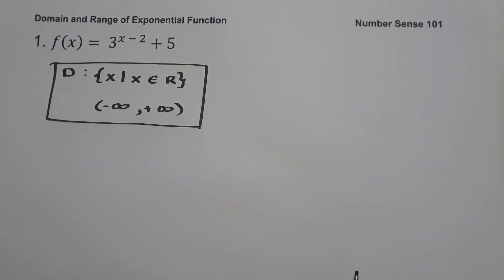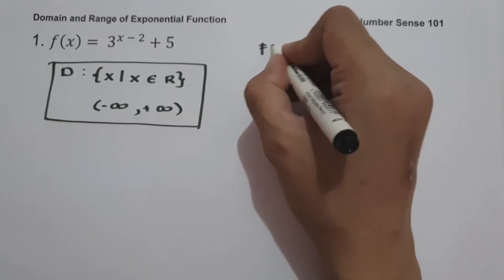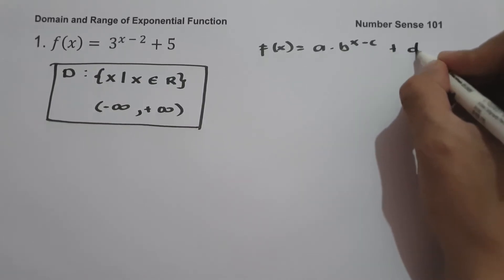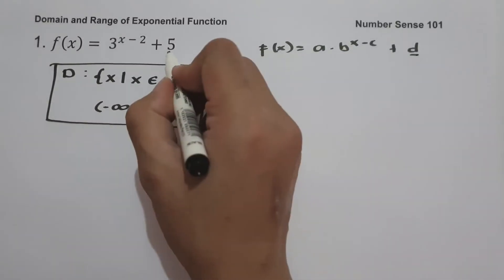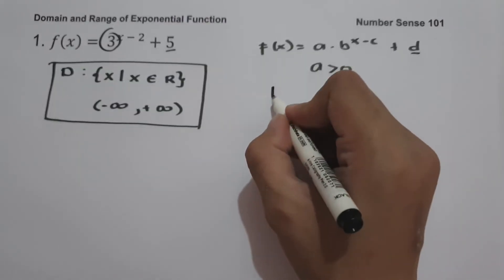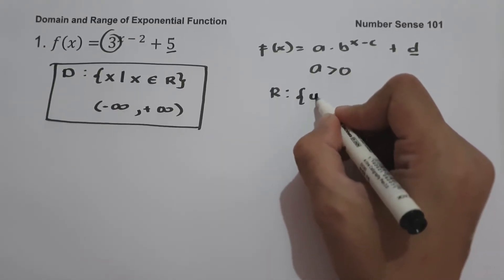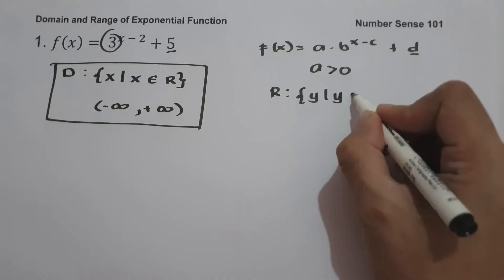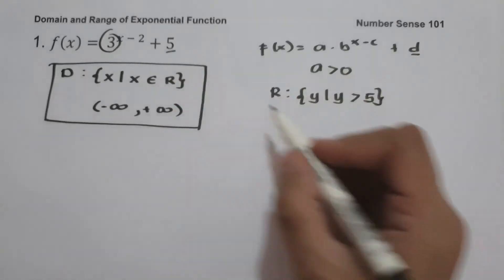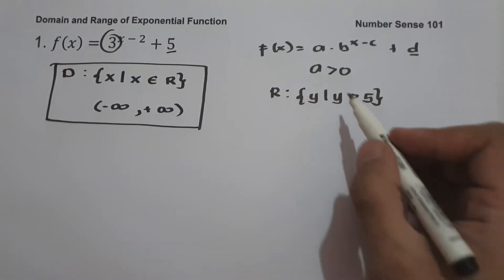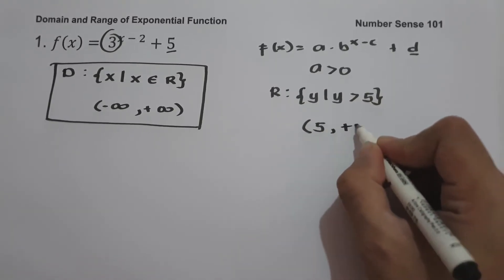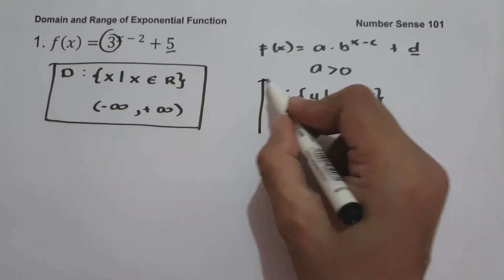To find the range, since the function is written in the form f(x) = a times b raised to x minus c plus d, where d is our horizontal asymptote and the value of a is greater than 0, our range is the set of y values such that y is greater than d, which is 5. In interval notation, that is from 5 up to positive infinity, where 5 is not included.